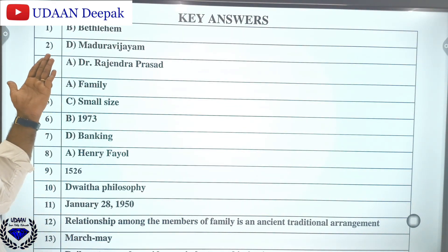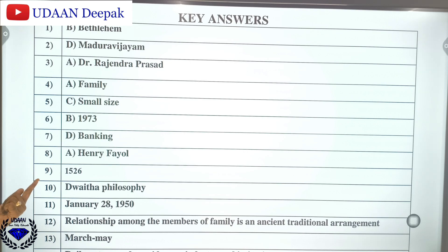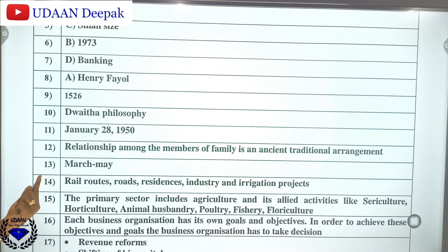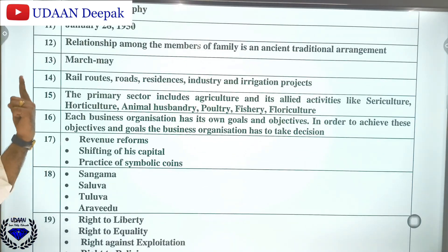Now the key answers: The first answer is Gattalam. Question number 2 answer — question number 3: Rajendra Prasad. Question number 4: Family. Question number 5: Small size. Then 1973. Banking. Henry Fayol. 1526. Dvaita philosophy. January 28th, 1950. You can just go through these answers on screen.